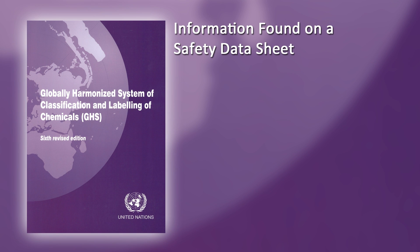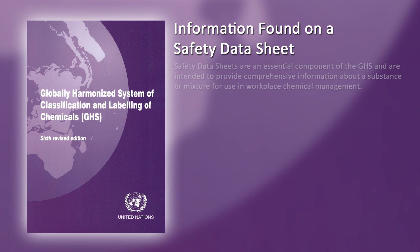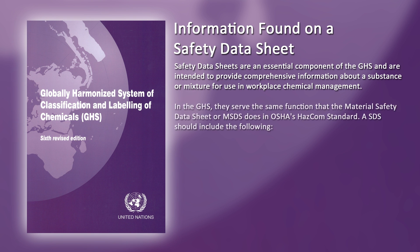Information found on a safety data sheet. Safety data sheets are an essential component of the GHS, and are intended to provide comprehensive information about a substance or mixture for use in workplace chemical management. In the GHS, they serve the same function that the material safety data sheet (MSDS) does in OSHA's HazCom standard.